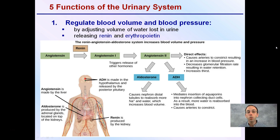The first function is to regulate blood volume and blood pressure. It does this by adjusting the volume of water lost in urine, and also by releasing renin and erythropoietin. These are two ways that our body can help regulate our volume of blood, but also our pressure.